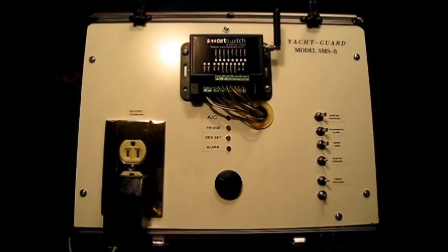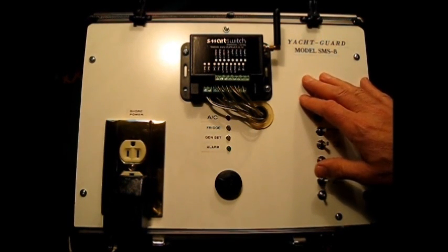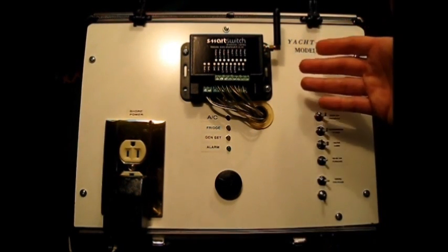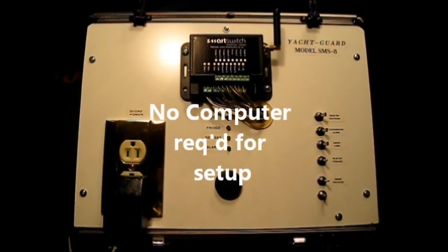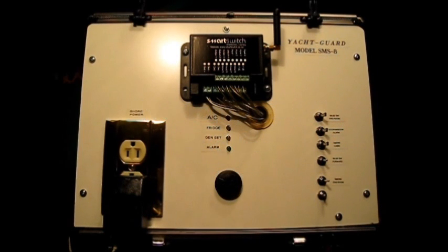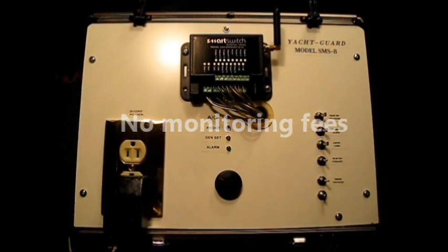The entire setup process for the Yacht Guard system is done through your cell phone, sending text messages to identify and name all of the inputs and outputs that you would have monitored and the various parameters surrounding them. No computer is required to set up this system. In addition, there are no monitoring fees. The only fee that you'll pay on a monthly basis is to your cell phone provider for the text messages that are sent to and from the system.